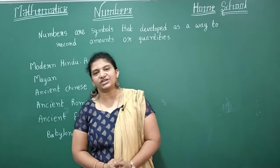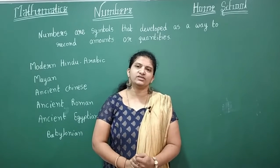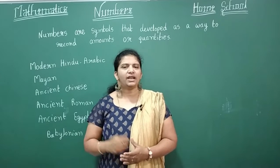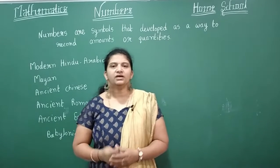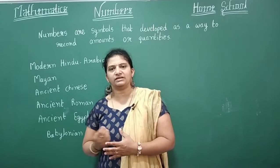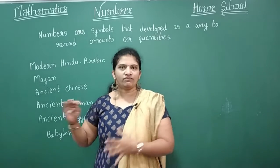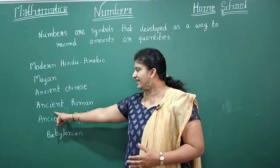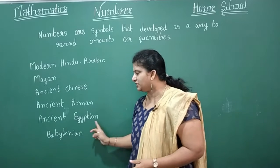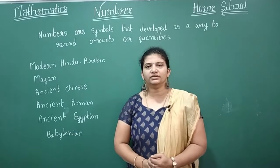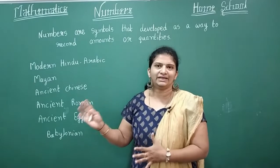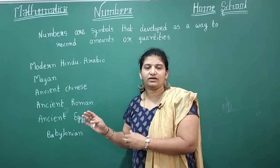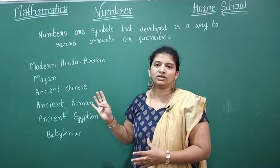Many civilizations have developed their own way of symbols for numbers. Numbers are nothing but symbols to represent quantities. Some of those are Mayan numbers, ancient Chinese numbers, ancient Roman numbers, ancient Egyptian numbers, and Babylonian numbers. These are different varieties of numbers — they had their own way of representing numbers in different symbols, not like our one, two, three.